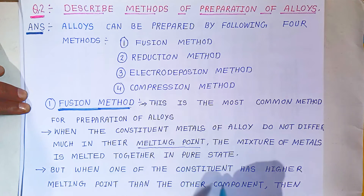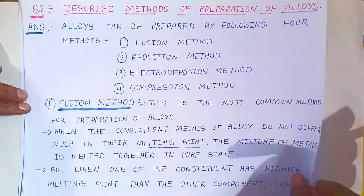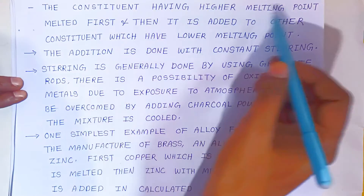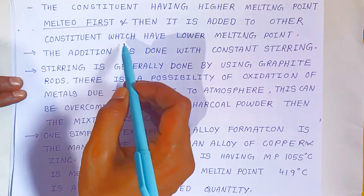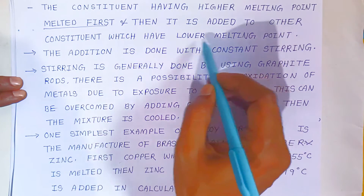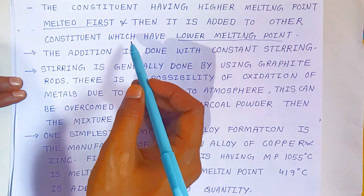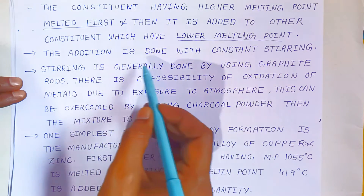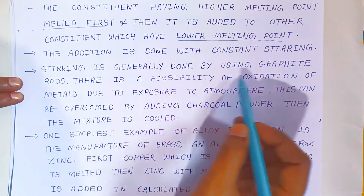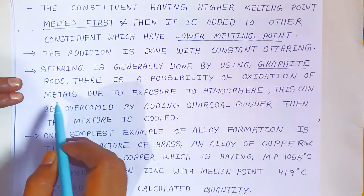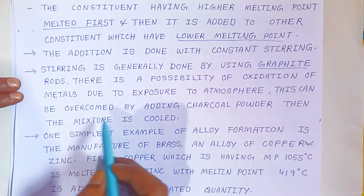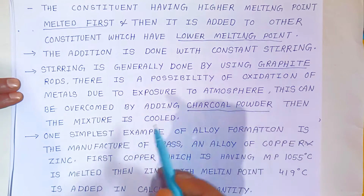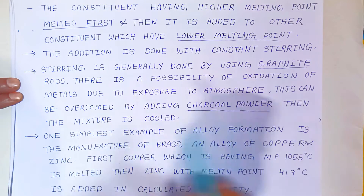But when one of the constituent metals has a higher melting point than the other, the constituent with the higher melting point is melted first. Then the constituent metals with the lower melting point are added. The addition is done with constant stirring, generally using a graphite rod. There is a possibility of oxidation of the metal due to exposure to the atmosphere, and this can be overcome by adding charcoal powder. Then the mixture is cooled.